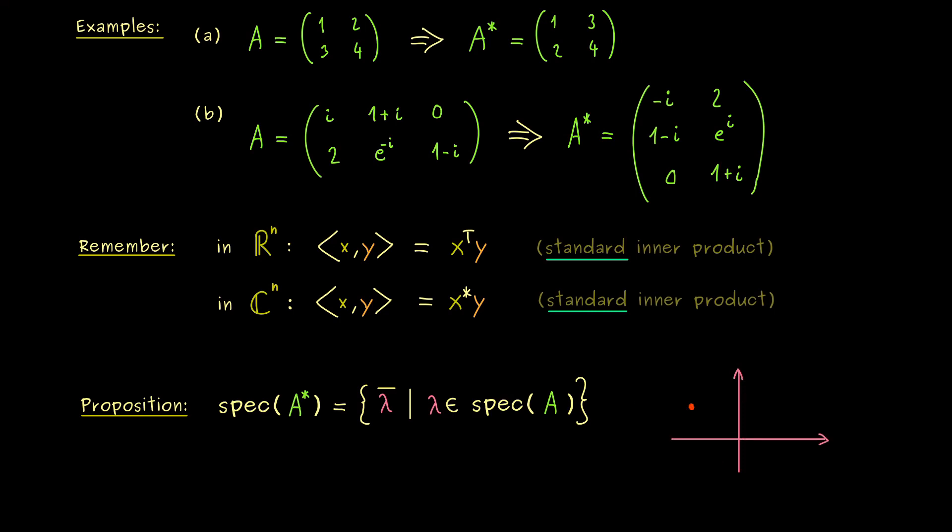So in the complex plane, this means if these are the eigenvalues of A, then reflected with respect to the real axis here, you find the eigenvalues of A star. In particular, they definitely share eigenvalues on the real axis here.